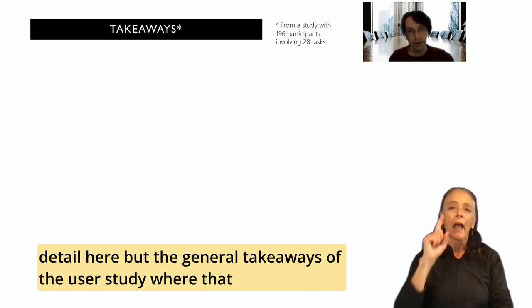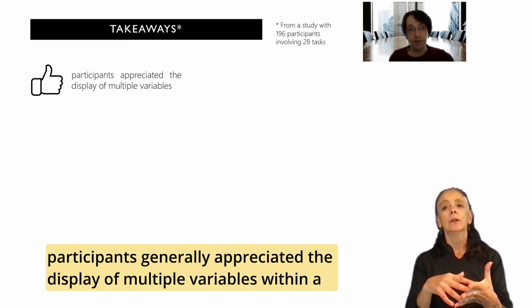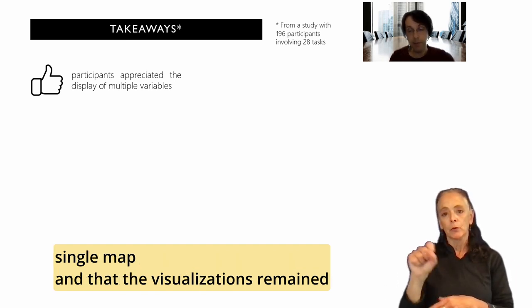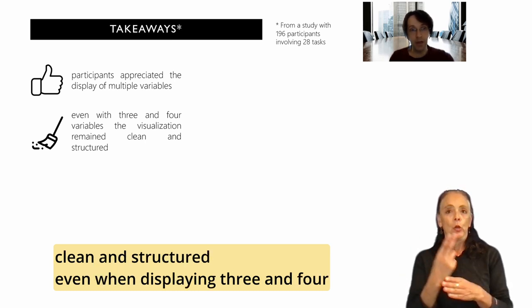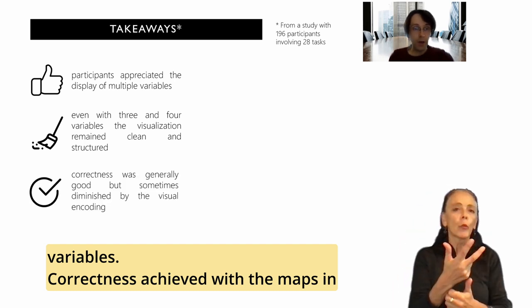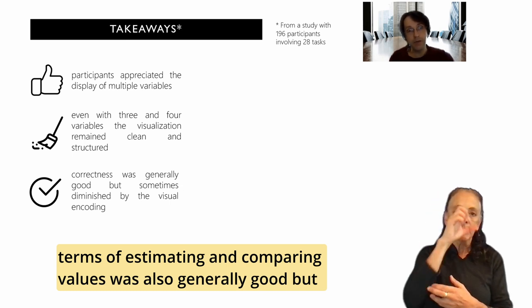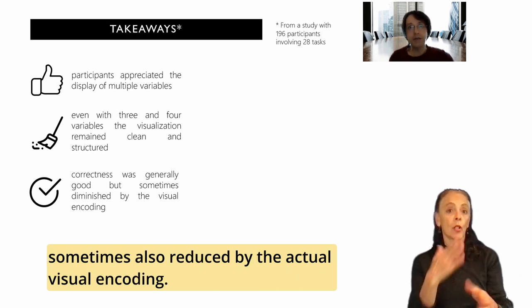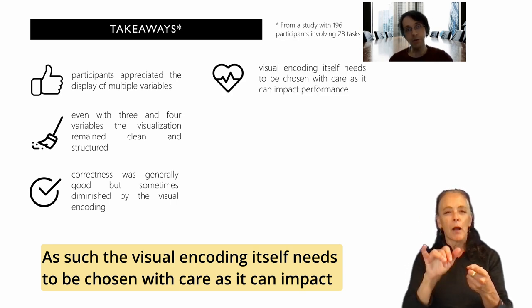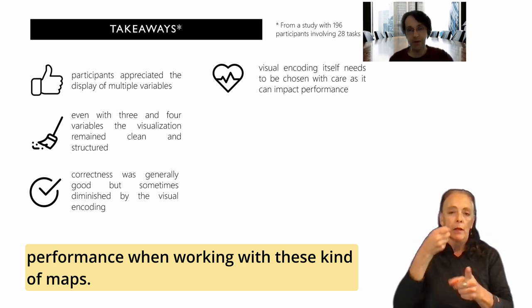I can't go into too much detail here, but the general takeaways of the user study were that participants generally appreciated the display of multiple variables within a single map, and that the visualizations remained clean and structured even when displaying three and four variables. Correctness achieved with the maps in terms of estimating and comparing values was also generally good, but sometimes also reduced by the actual visual encoding. As such, the visual encoding itself needs to be chosen with care as it can impact performance when working with these kinds of maps.